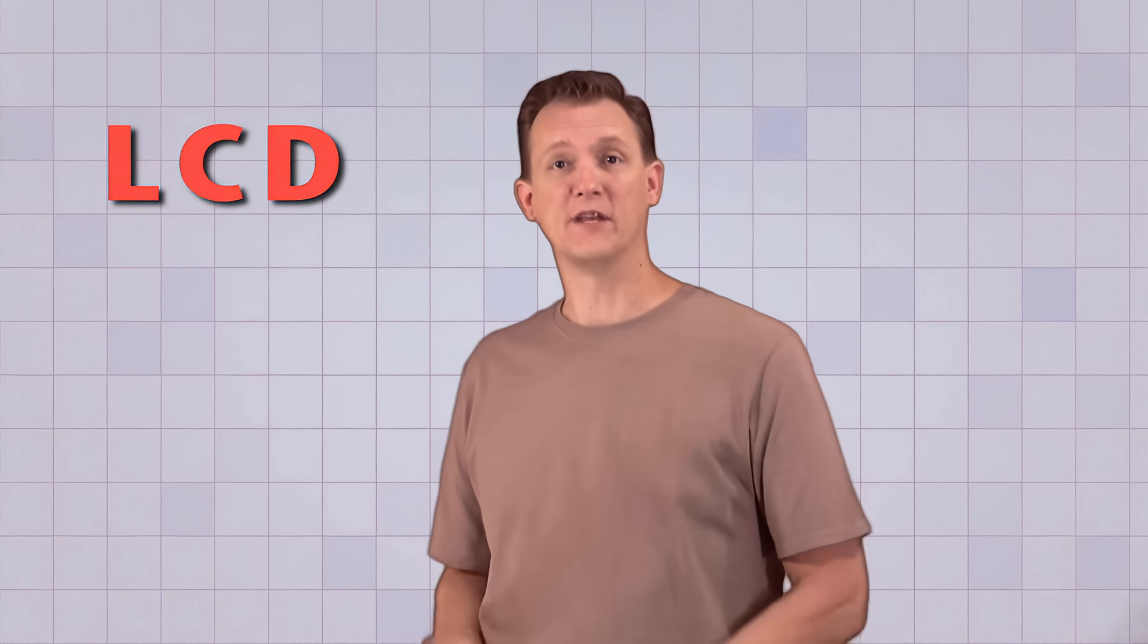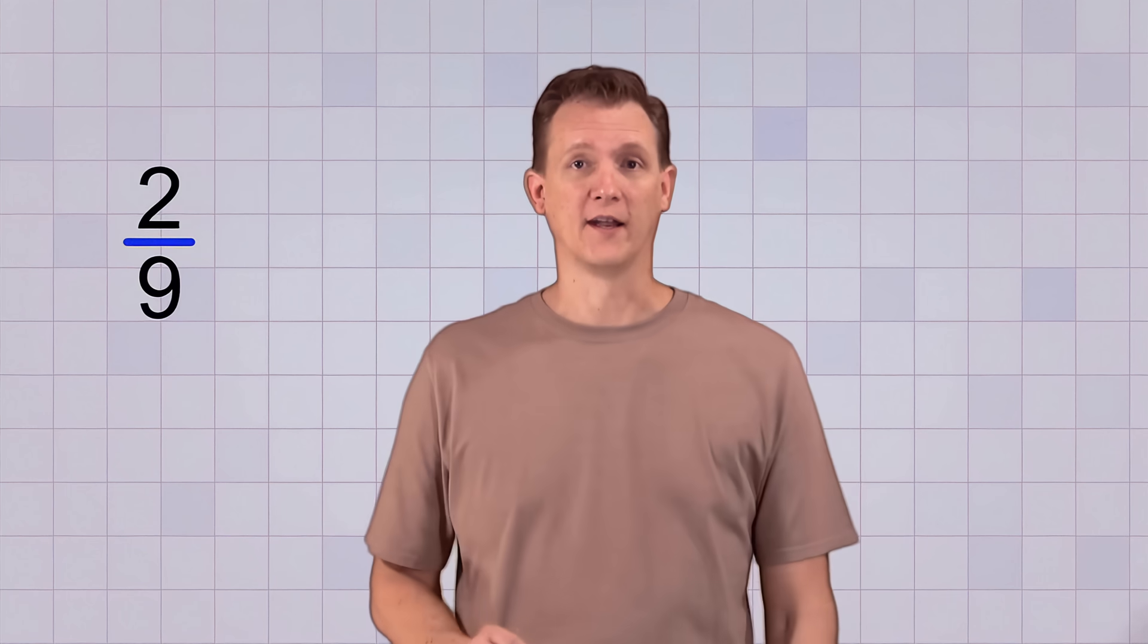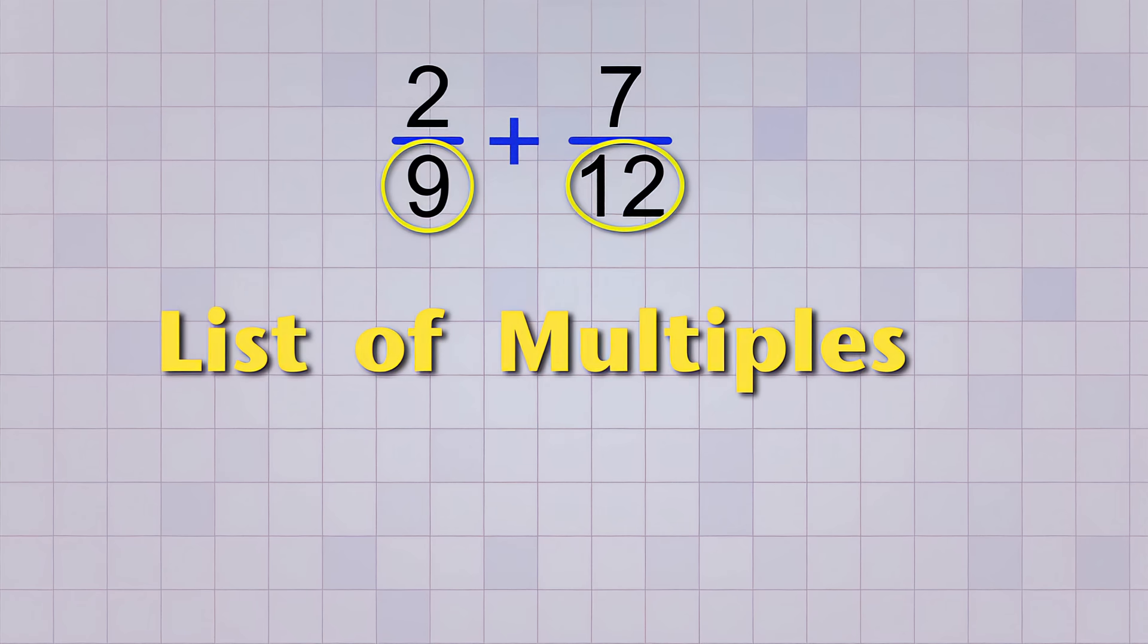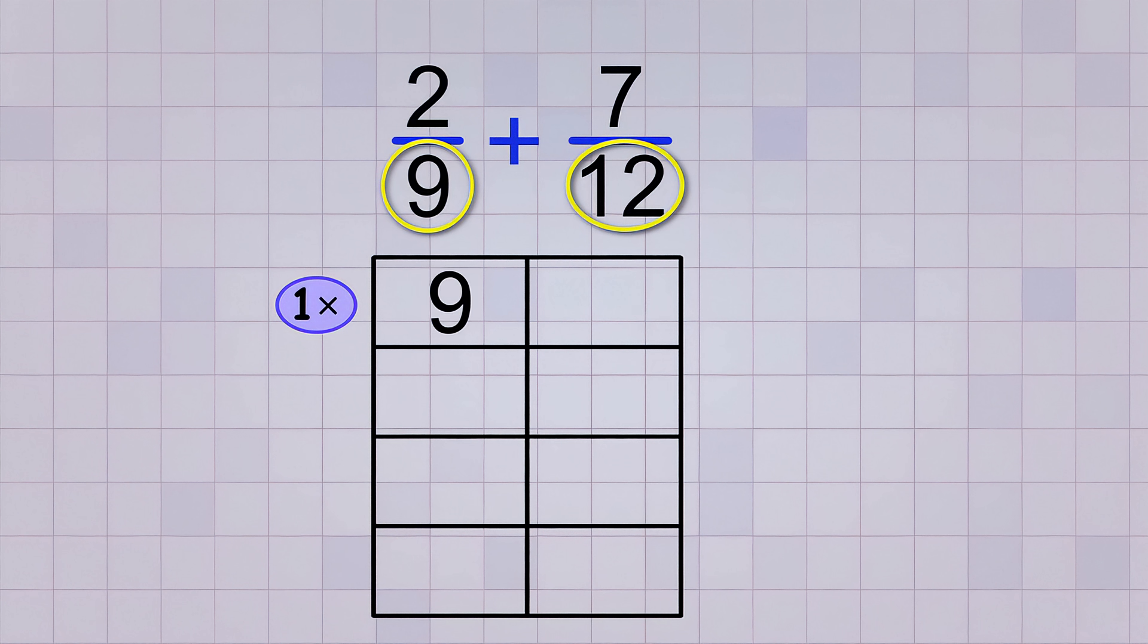Ready for one more example? Let's find the LCD for these fractions: 2 over 9, and 7 over 12. Again, let's start by making a list of multiples for our two bottom numbers to look for a common multiple. 9 times 1 is 9, and 12 times 1 is 12, of course.